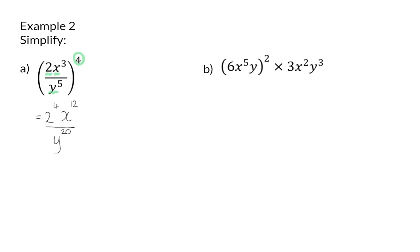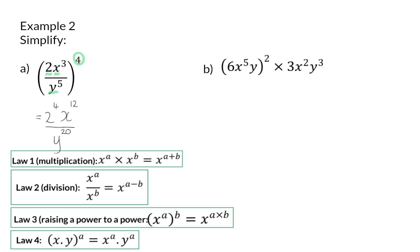In b, we now have a bracket multiplied by another product. And this means that we will use a variety of laws. We will be using law 3, 4, and 1. I'm going to start off by simplifying the bracket. And for that, we're going to use the fourth law by applying the exponent to each base. This will then give us 6 to the power of 2. And then we will use the third law to say x to the power of 10 times y to the power of 2, because y has an exponent of 1. And this still has to be multiplied by 3x squared y cubed.